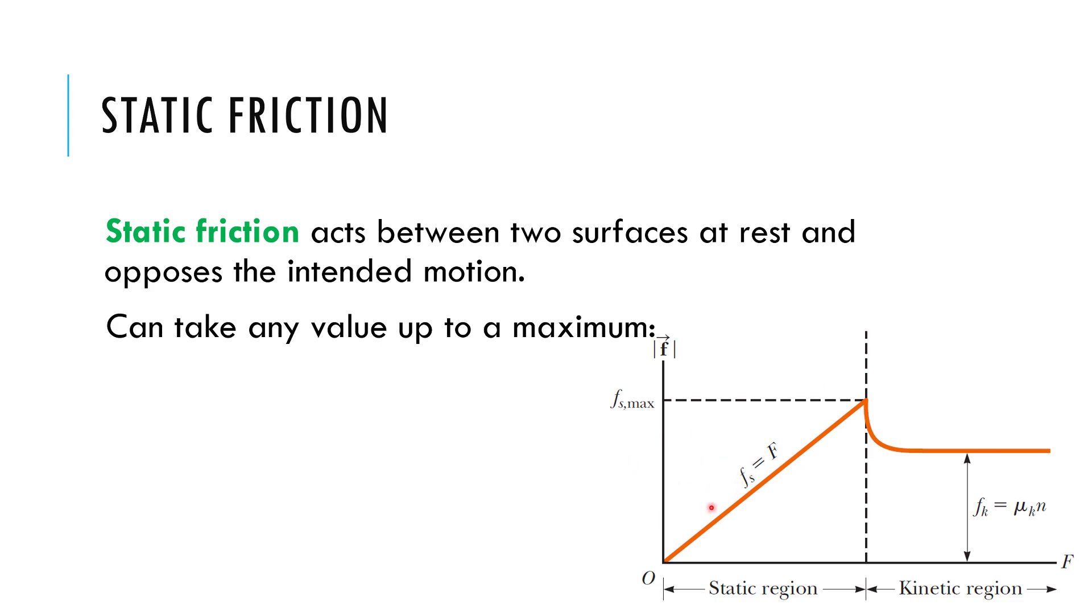This graph really summarizes pretty much everything we need to know about friction. So here's the static region here. So on the x-axis here we have an applied force, so this would be we are applying a greater and greater force and seeing what happens to my force of friction. That's what this F is. So at first, if I'm not applying any force, nothing needs to oppose me, so I apply no force, there's no force of friction. I apply two newtons of force, two newtons of static friction opposes me to keep the table at rest. I apply 10 newtons of force, the table pushes back with 10 newtons, keeps it at rest. I apply 19.9 newtons of force, the table pushes back with 19 newtons of force.